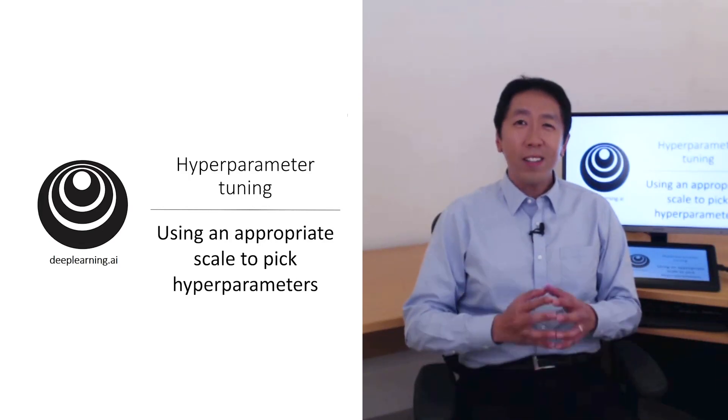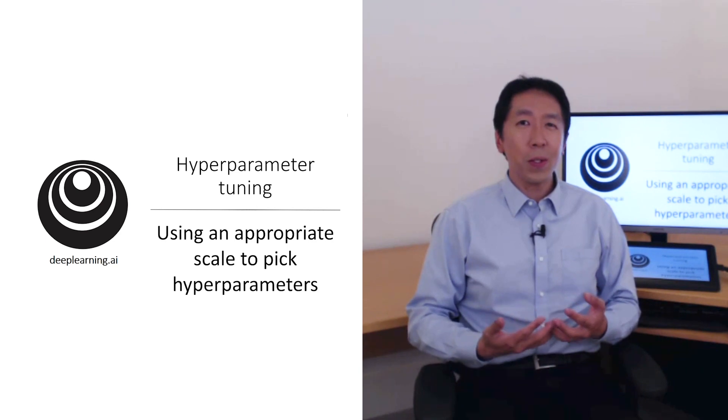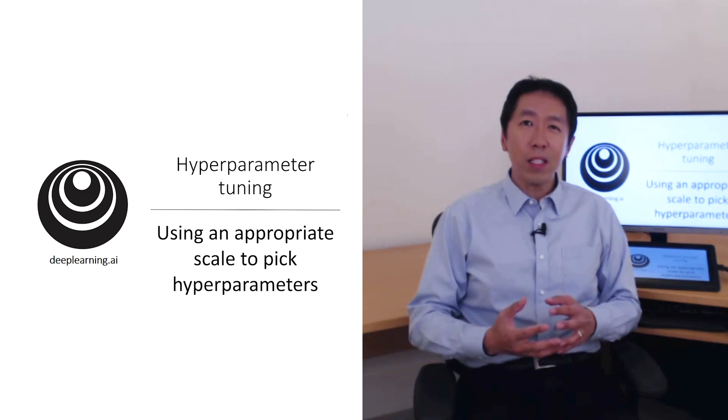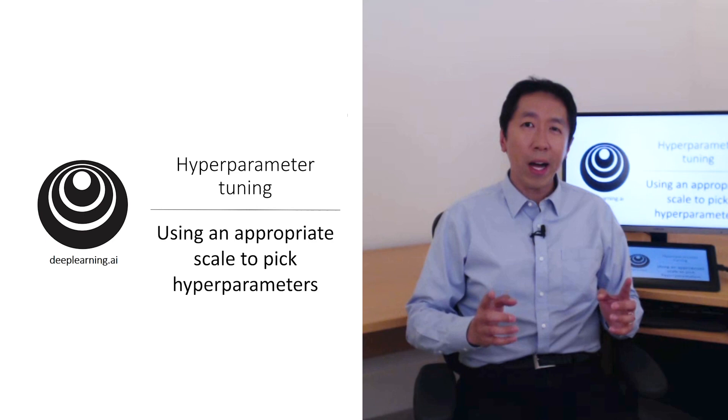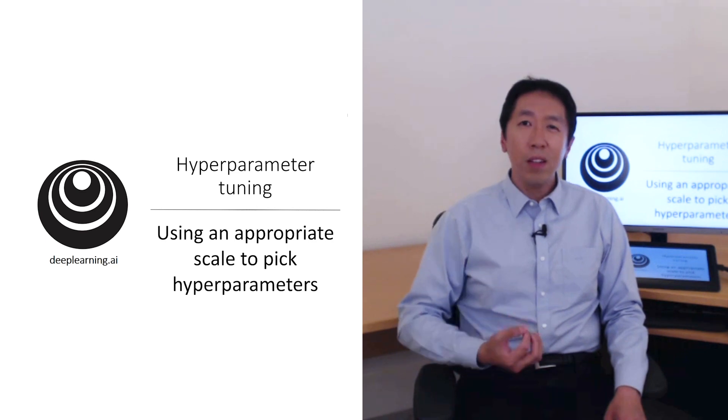In the last video, you saw how sampling at random over the range of hyperparameters can allow you to search over the space of hyperparameters more efficiently. But it turns out that sampling at random doesn't mean sampling uniformly at random over the range of valid values. Instead, it's important to pick the appropriate scale on which to explore the hyperparameters. In this video, I want to show you how to do that.